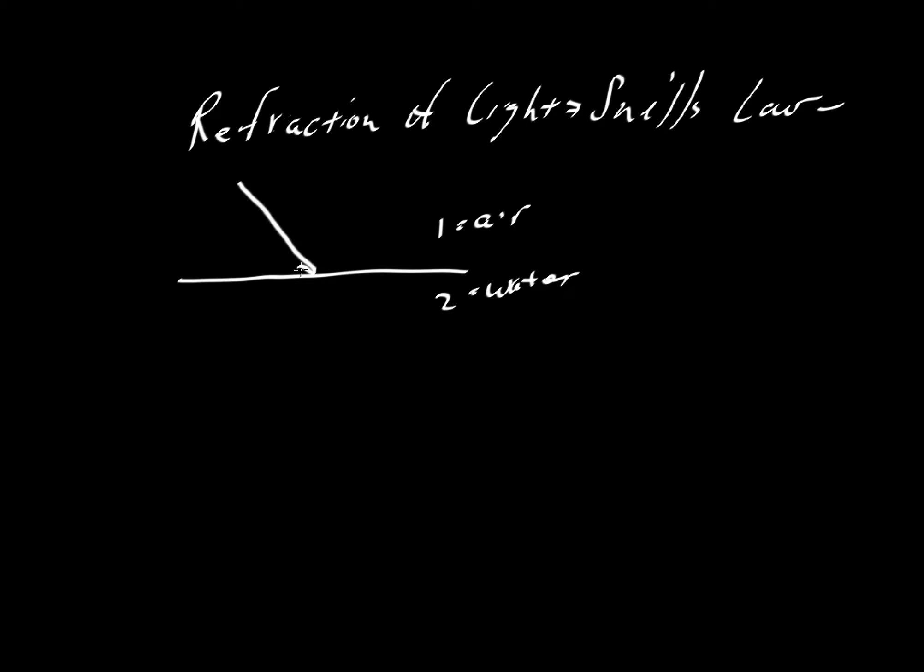As light comes in, when it hits this substance here, it might not necessarily travel through that substance in a straight line. Instead it is likely to be bent, unless light travels with the same velocity in both materials. It's that bending of light that we refer to as refraction.